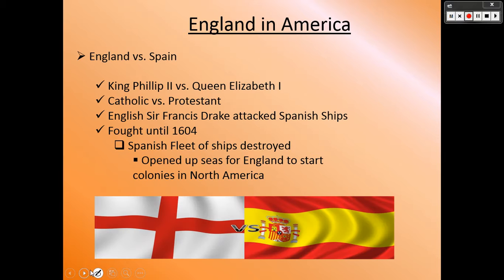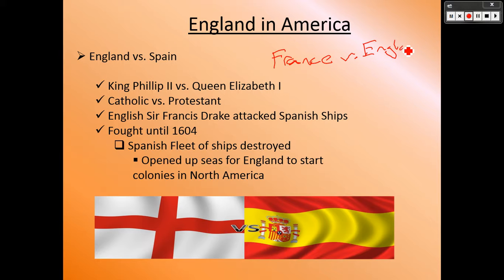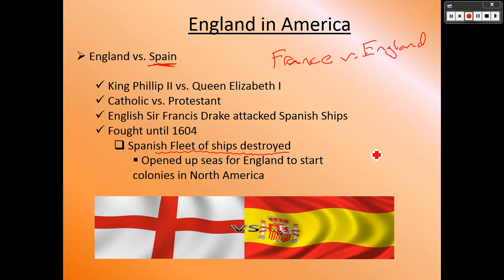If you remember back to seventh grade, you learned about how there was a giant war between France and England that lasted about 100 years — hence the Hundred Years War. But England had also been fighting Spain. After that time period, their whole game plan was to try to get to India for that trade route, and they kept being blocked. Eventually during the war with Spain, they were able to destroy Spain's fleet of ships.